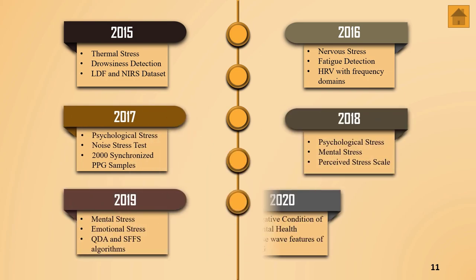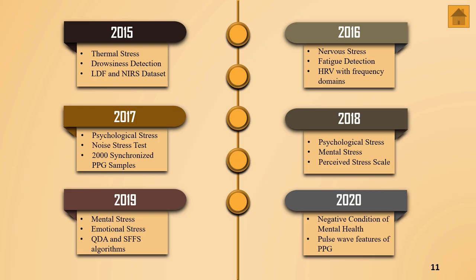In the literature review, I discuss past work from the recent six years using PPG signals. In 2015, thermal stress and rosiness detection was carried out using LDF and NIRS datasets. In 2016, nervous stress and fatigue were detected using HRV data with frequency domains. In 2017, a psychological stress test was carried out using 200 synchronized samples. In 2018, the perceived stress scale detected anomalies. In 2019, mental and emotional stress were detected using QDA and SFFS algorithms. In 2020, pulse wave features of PPG enabled researchers to identify negative conditions of mental health.